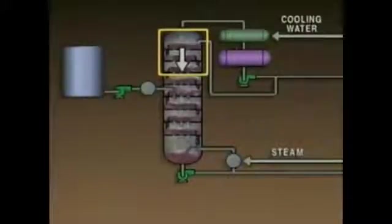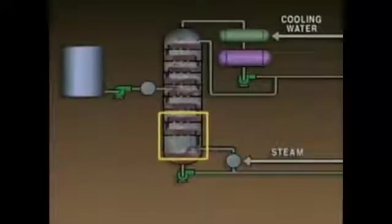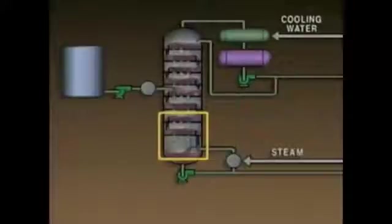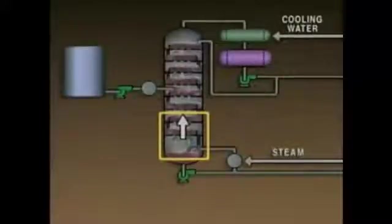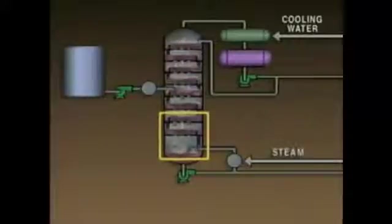Some of the lighter components will remain as a liquid and flow down the tower. The temperature at the bottom of the tower is also important. The temperature at the bottom of the tower is usually slightly below the boiling point of the heavier component. If the temperature at the bottom of the tower is too high, more of the heavier components will vaporize and move up the tower instead of remaining as a liquid. If the temperature at the bottom of the tower is too low, less of the lighter components will vaporize and move up the tower.